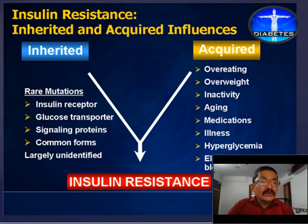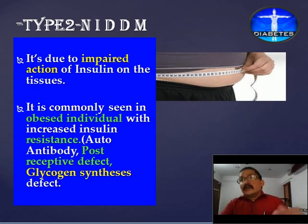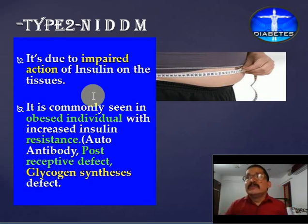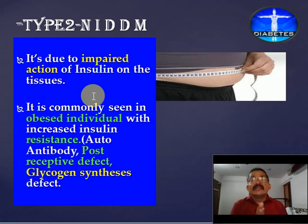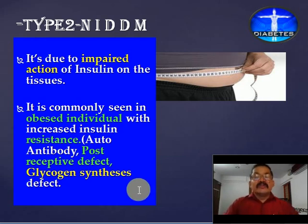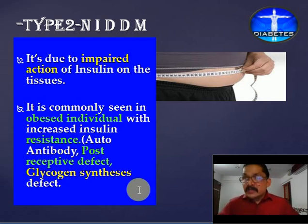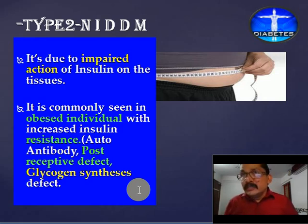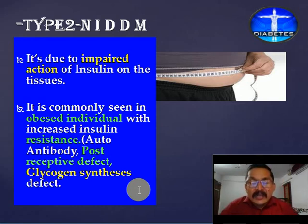In type 2 diabetes, it is mainly due to impaired action of insulin on the tissue. That means the patient may have sufficient or even excess insulin, but that insulin cannot act on the cells. Impaired action is one of the main causes of type 2 diabetes. It is commonly seen in obese individuals with increased insulin resistance, or due to any post-receptor signaling defect or glycogen synthesis defect — meaning anything which affects glycogen synthesis or the hepatic release mechanism may lead to insulin resistance.